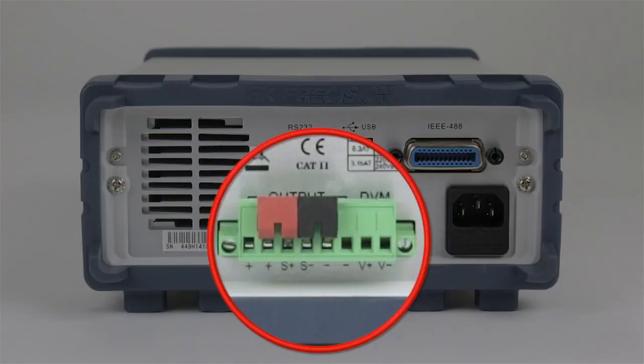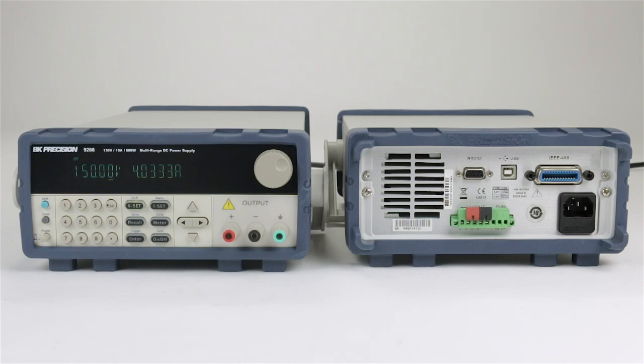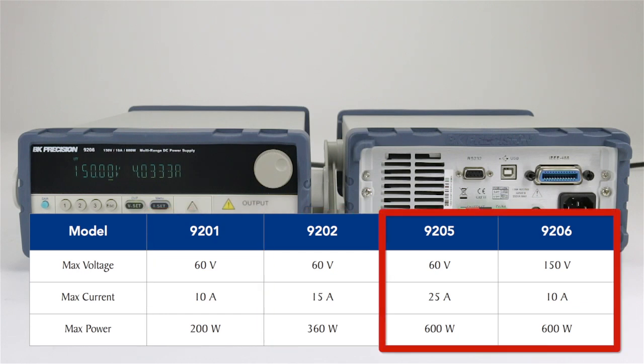Remote sense lines and optional digital voltmeter connections are provided. The 9200 series includes 4 models with the smallest providing a total of 200 watts, a 360 watt, and 2 versions of 600 watts, with the largest providing up to 150 volts.